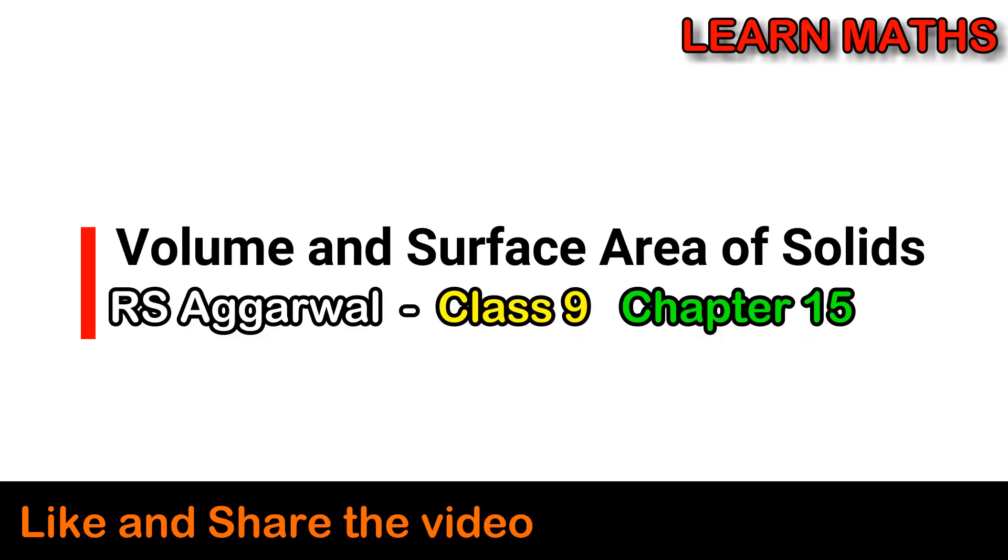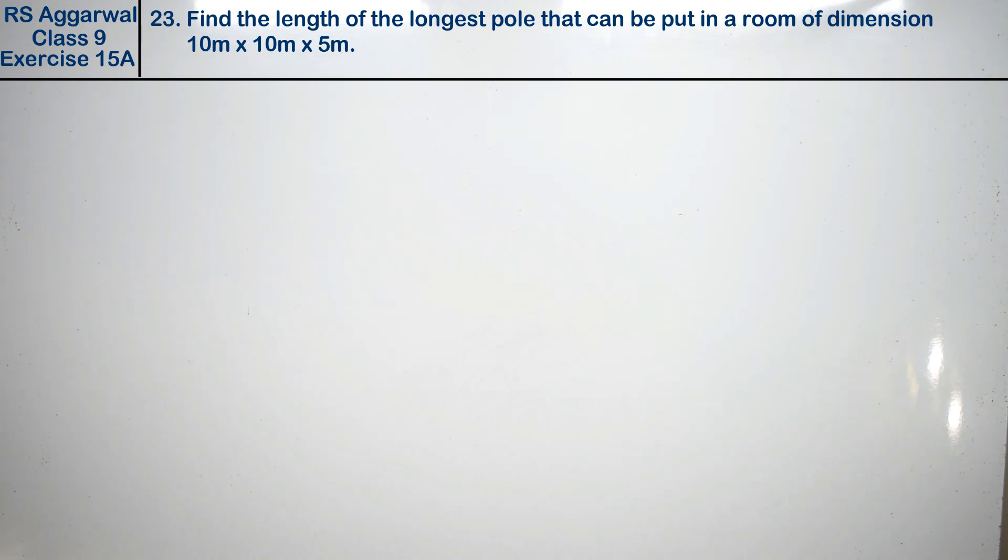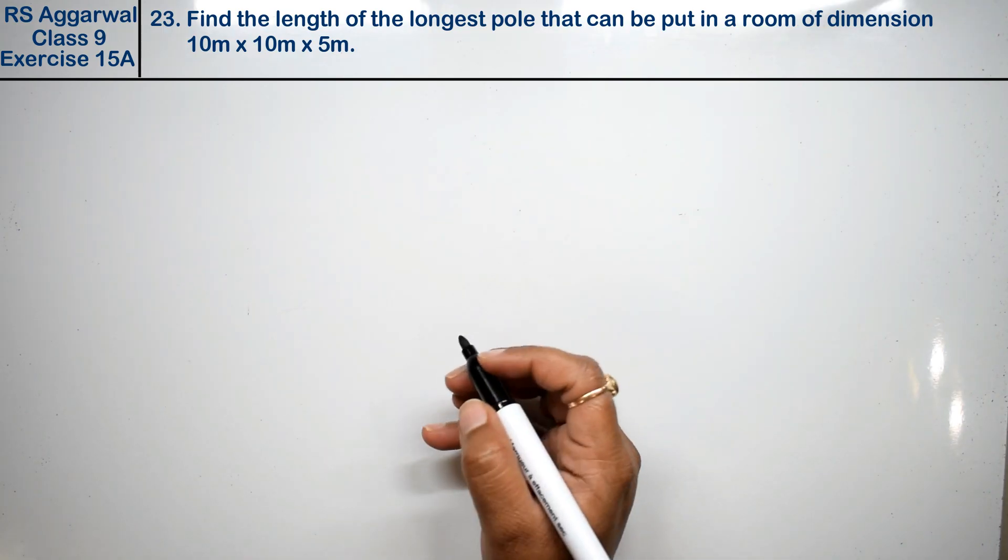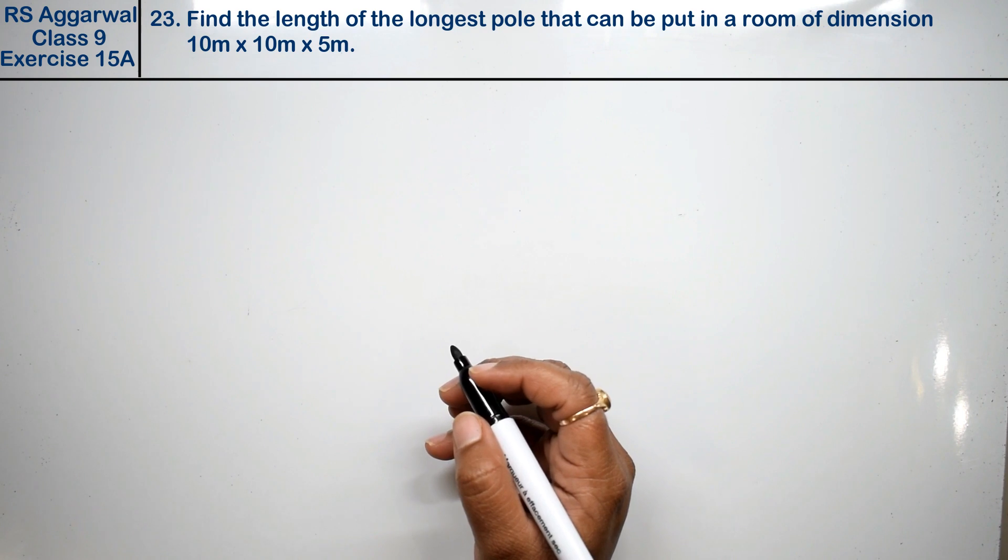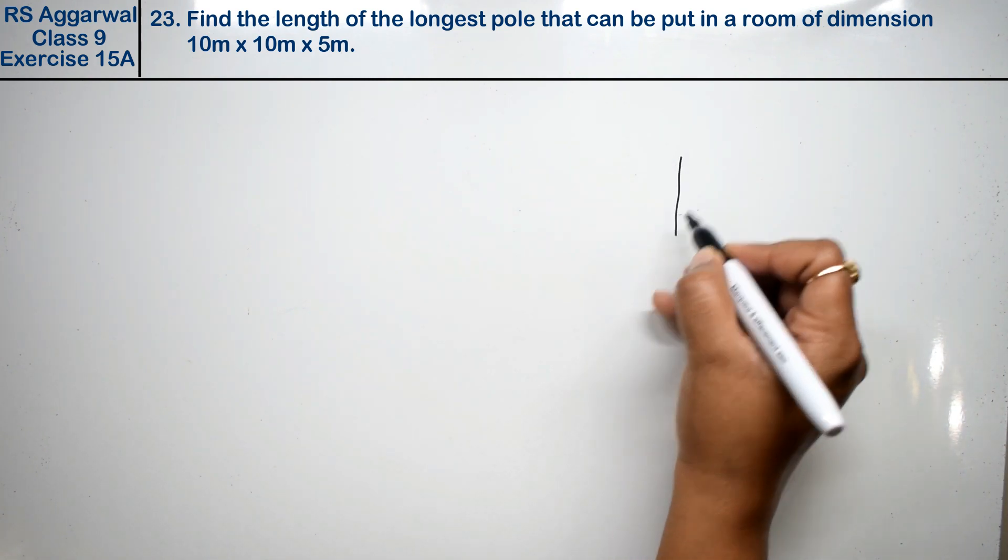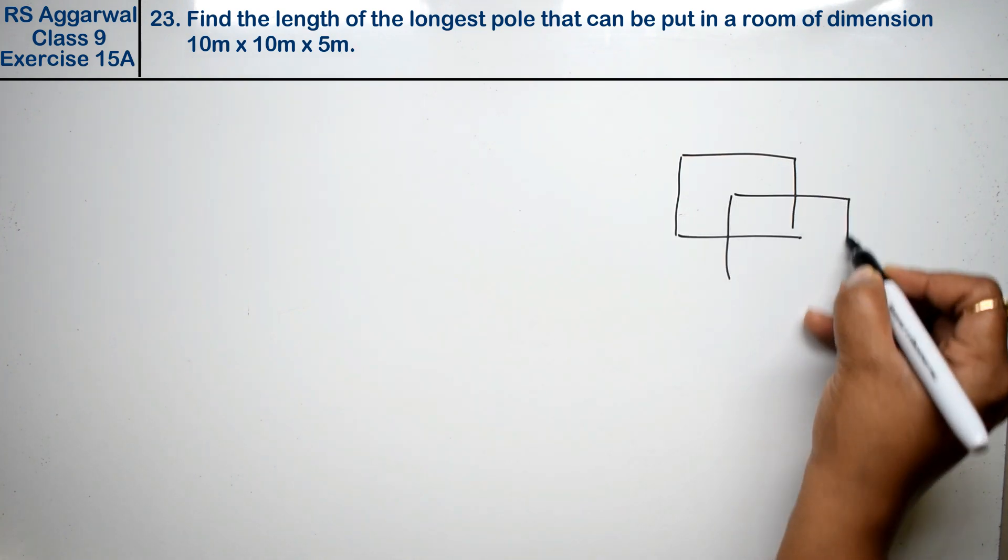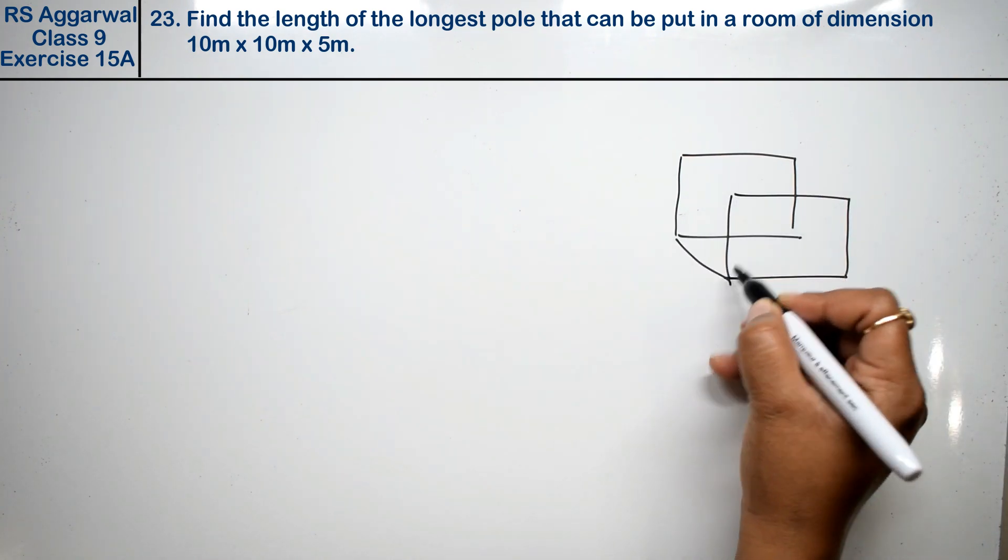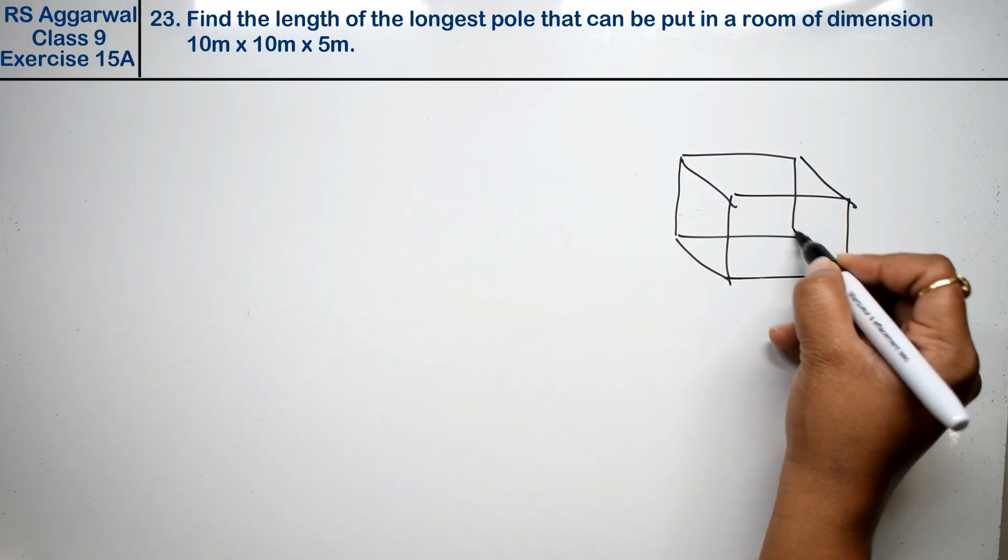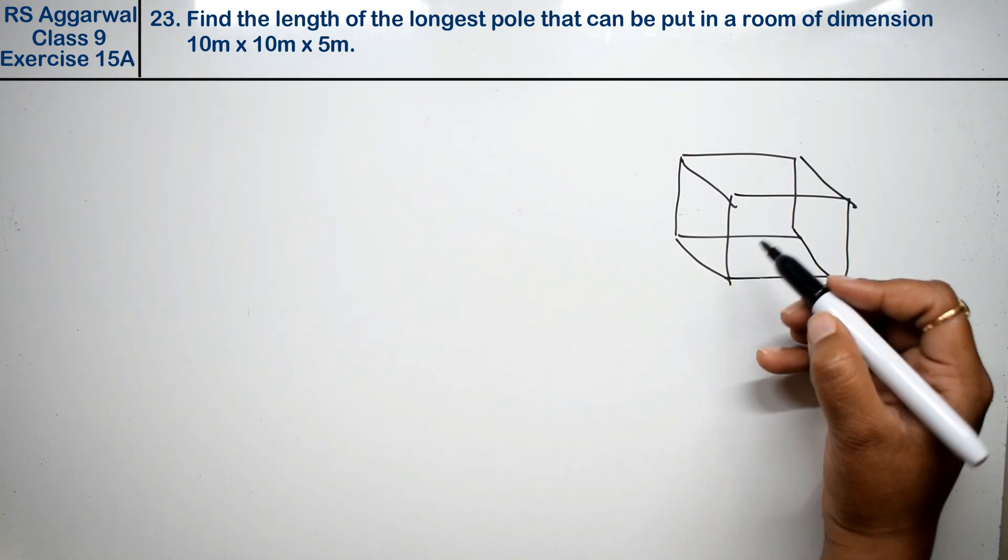Let's do question number 23 of exercise 15A, that is volume and surface area of solids. Question number 23 is find the length of the longest pole that can be put in a room of dimension. Friends, he is saying that this room has dimensions and we can write the longest pole.